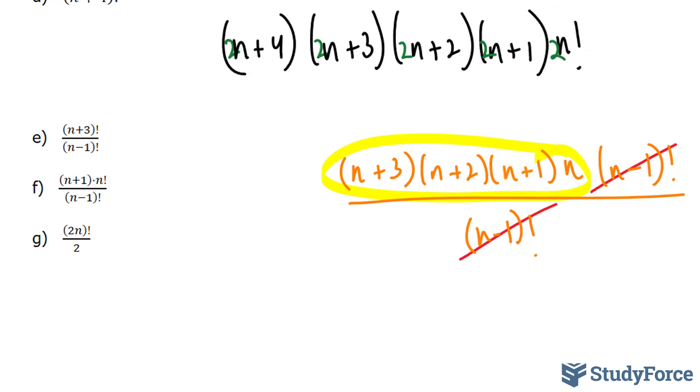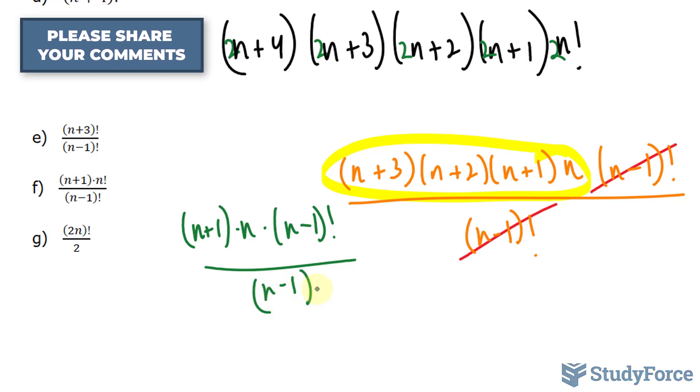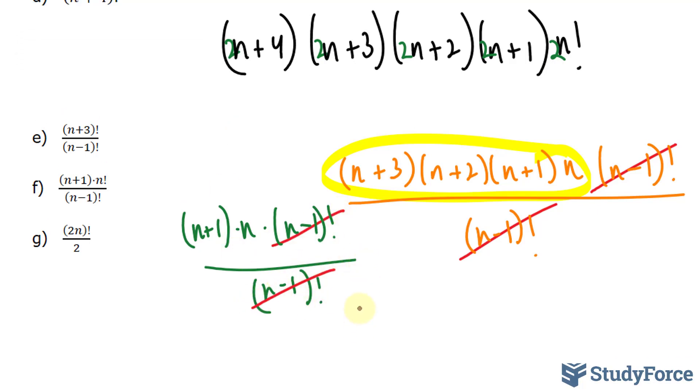Now let's move on to question f. Here we have (n+1) factorial and (n-1) factorial at the bottom. (n+1) stays the way it is. n factorial becomes n times (n-1) factorial. This will cancel out with the expression in the denominator, leaving us with (n+1) times n. And if you expand this, n squared plus n.